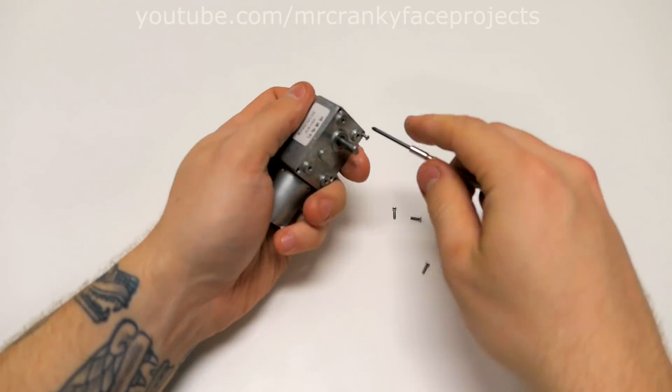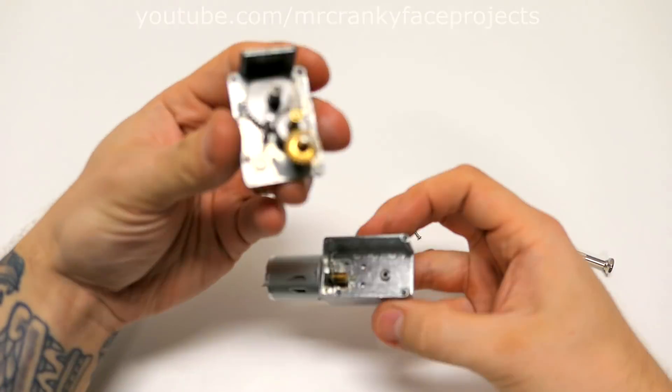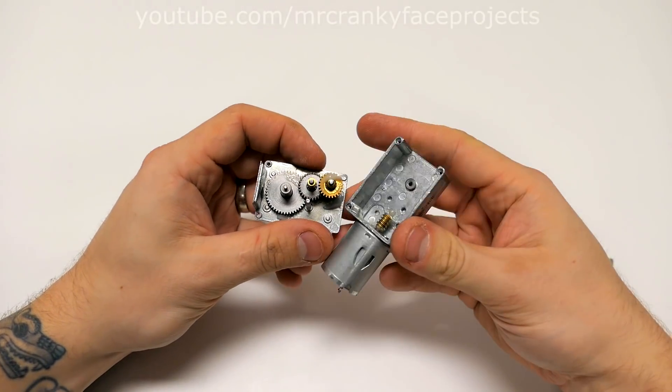Anyway, this is just a simple DC motor with some insane gear ratio, so the output shaft delivers around 25 RPM.